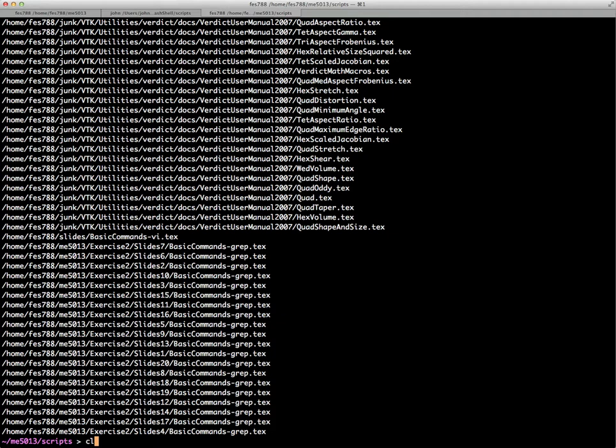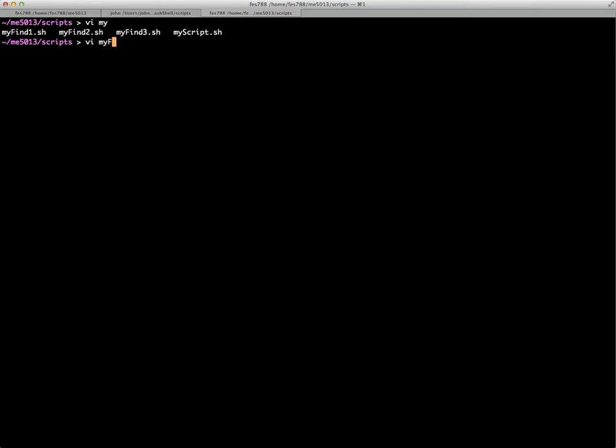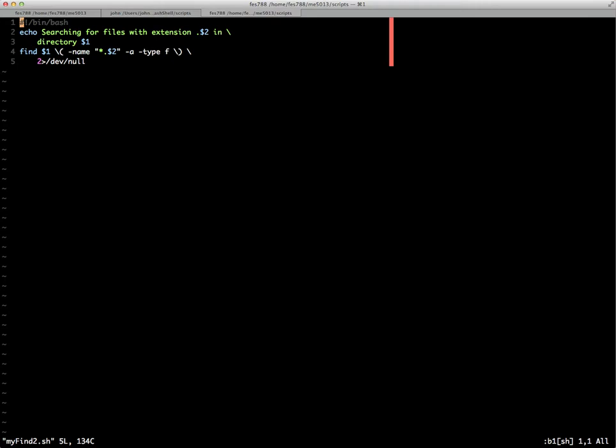But we're going to use command line arguments to run our script this time. So if we go back to the command line, this time we'll look at the file. I have my find two. Okay. And there it is, a little simpler. The dollar signs represent the parameter list that will define on the, or the arguments that will define on the command line. So the first argument I give it will be expanded in dollar sign one, dollar sign two will be the second one. If there was a third one, there would be a dollar sign three, et cetera.